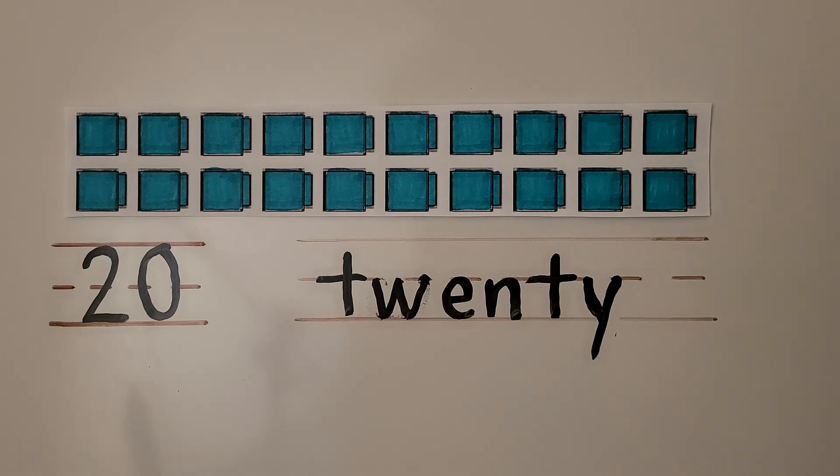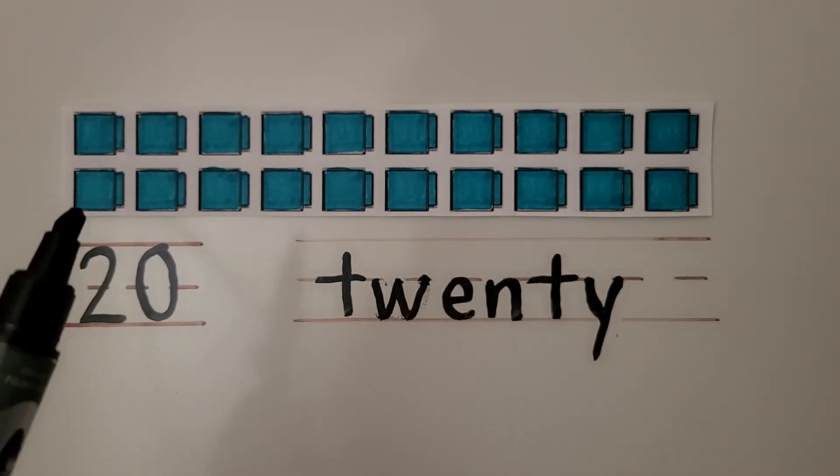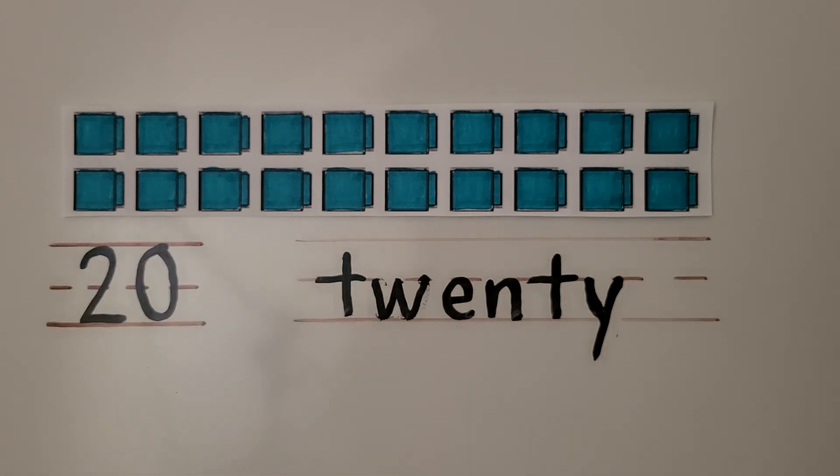Here we have some blue cubes. There are 10 cubes in the top row and 10 cubes in the bottom row. There are two sets of 10. There are 20 cubes in all.